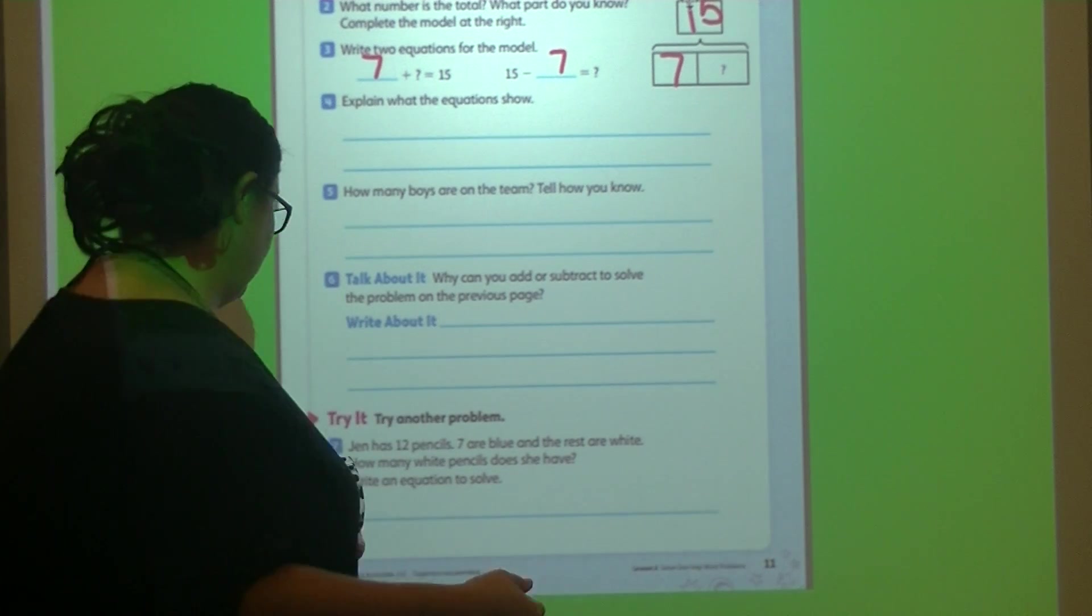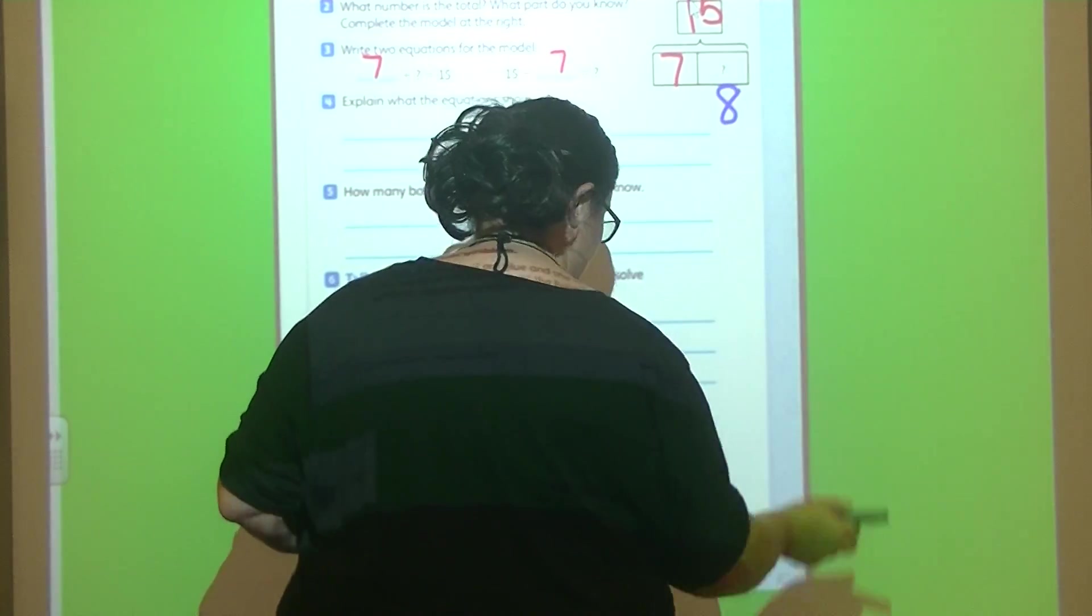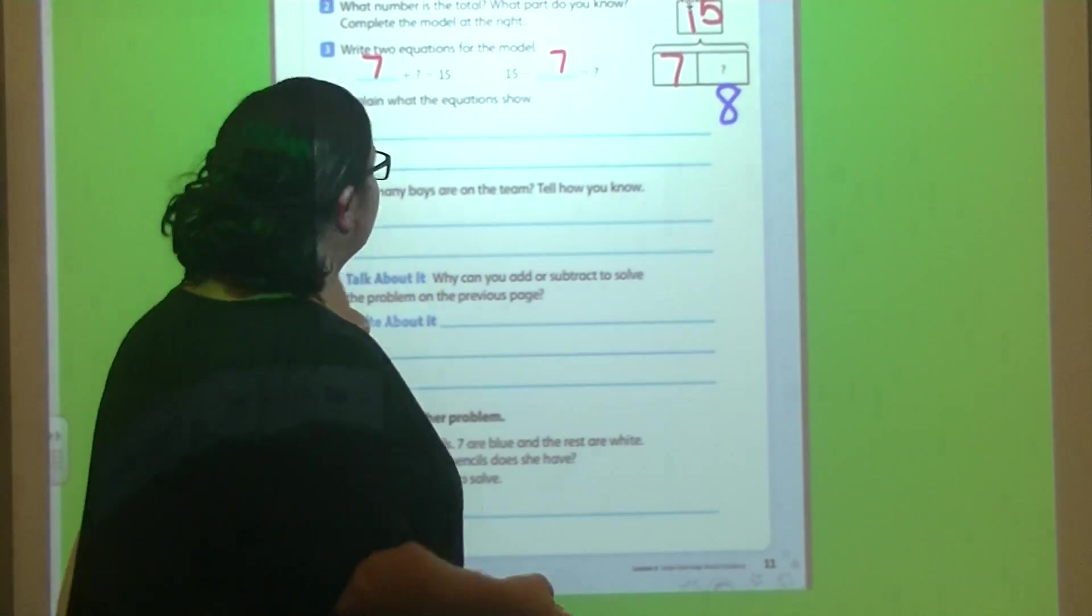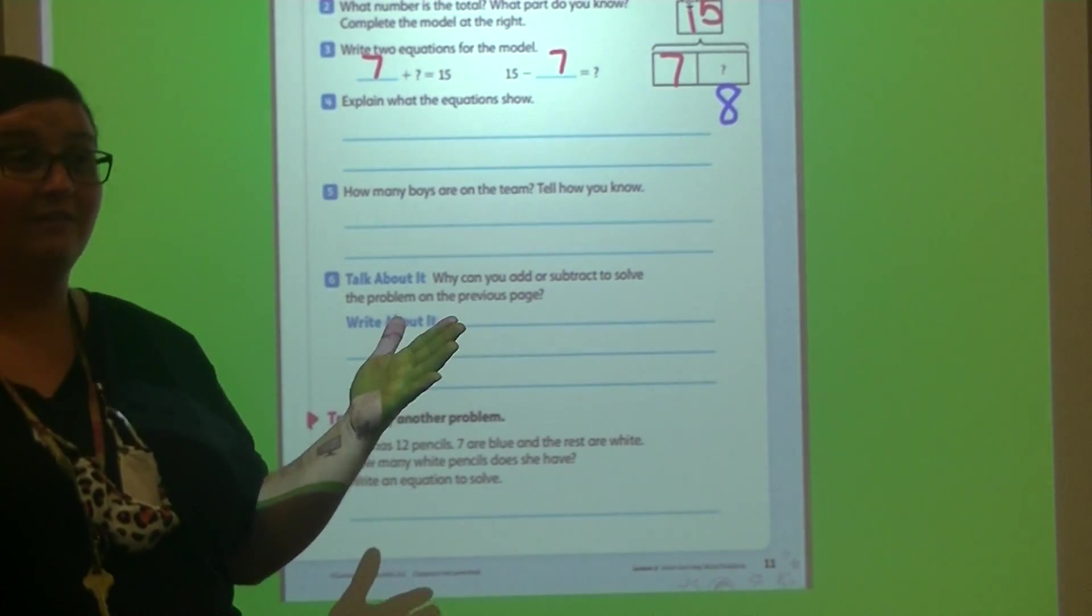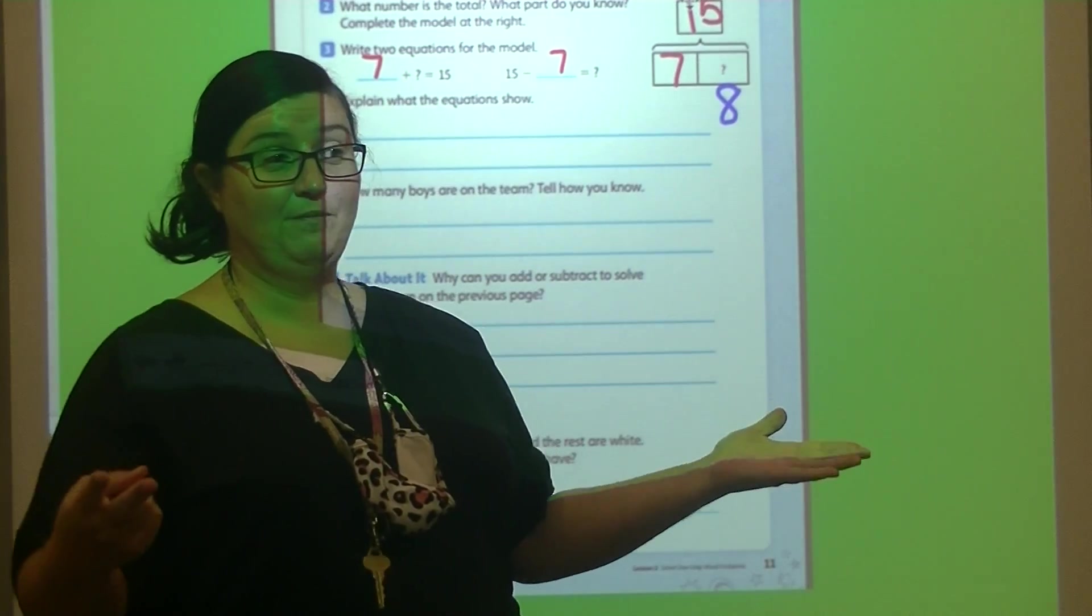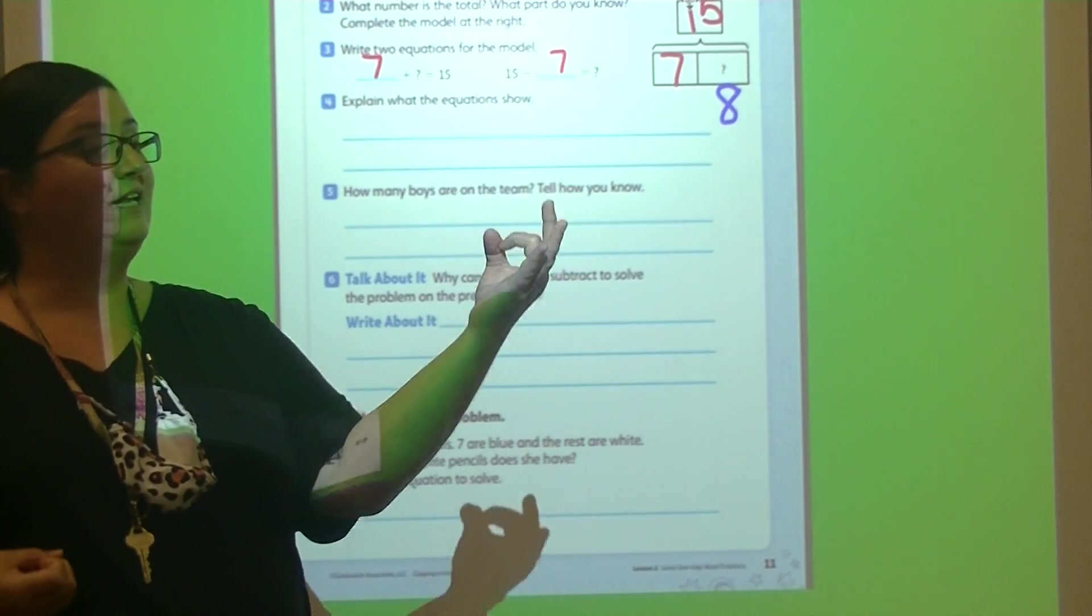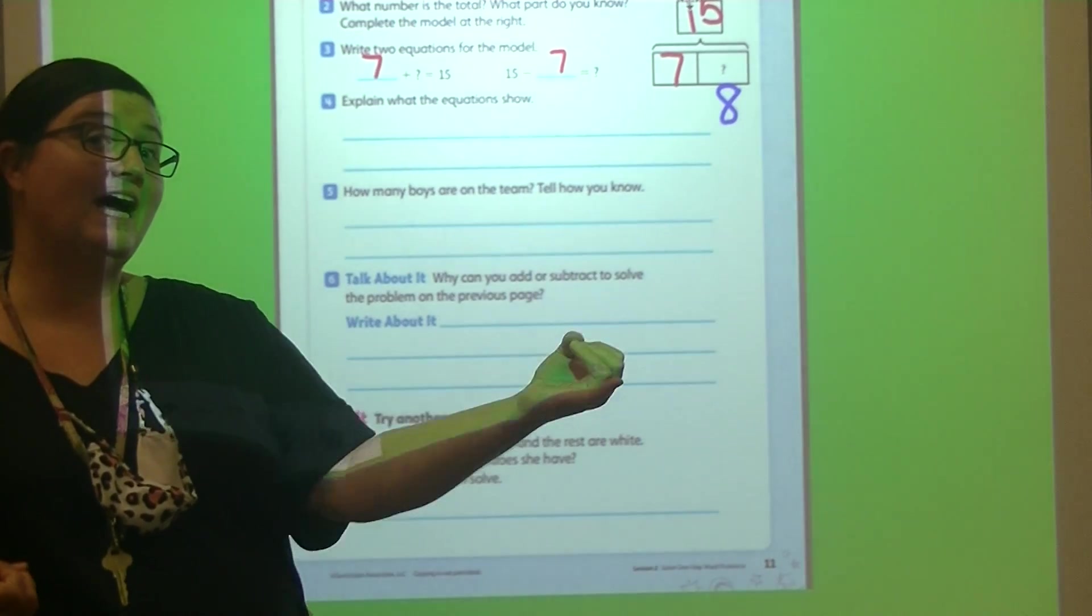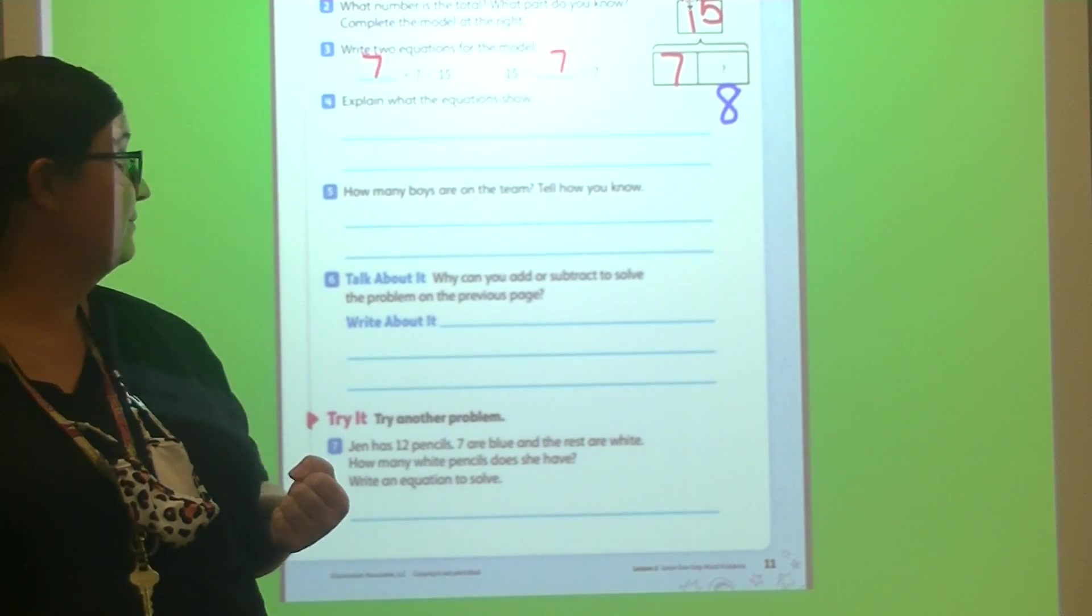8. Let's try it by subtracting and counting back and make sure we get the same answer. Alright, we've got 15 minus 7. Start with 15 and count back. 15, 14, 13, 12, 11, 10, 9, 8. Did we still get 8? Yes, we did.